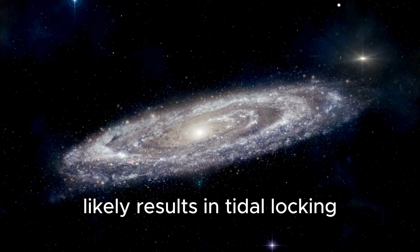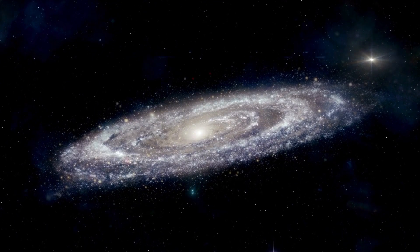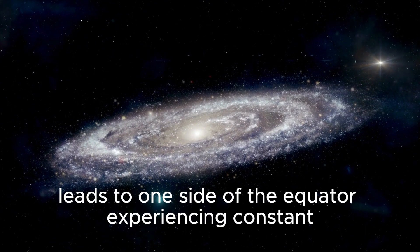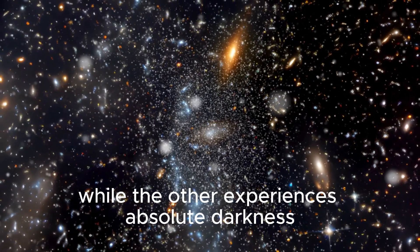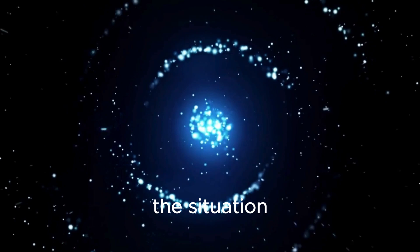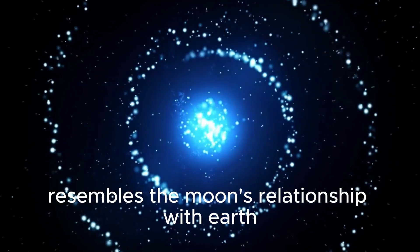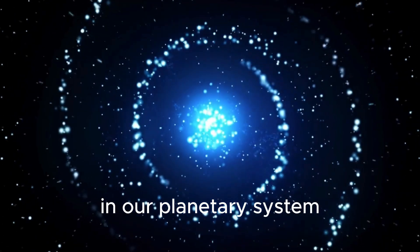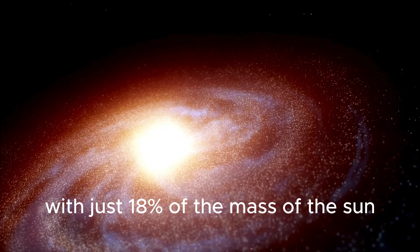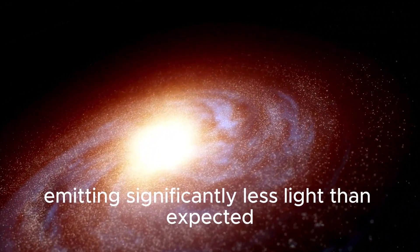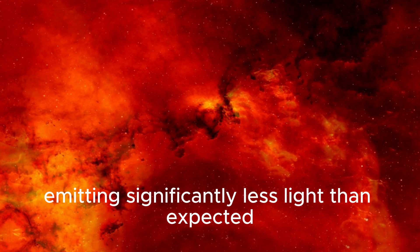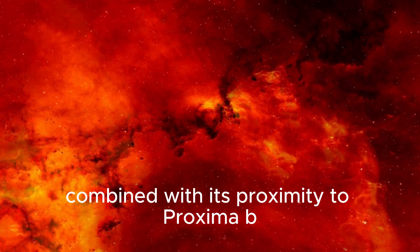This, in turn, leads to one side of the equator experiencing constant intense sunlight while the other experiences absolute darkness. The situation resembles the Moon's relationship with Earth in our planetary system. With just 18% of the mass of the Sun, Proxima Centauri produces a weak glow, emitting significantly less light than expected. Combined with its proximity to Proxima b, just 5% of the distance between Earth and the Sun, Proxima Centauri defies conventional assumptions.